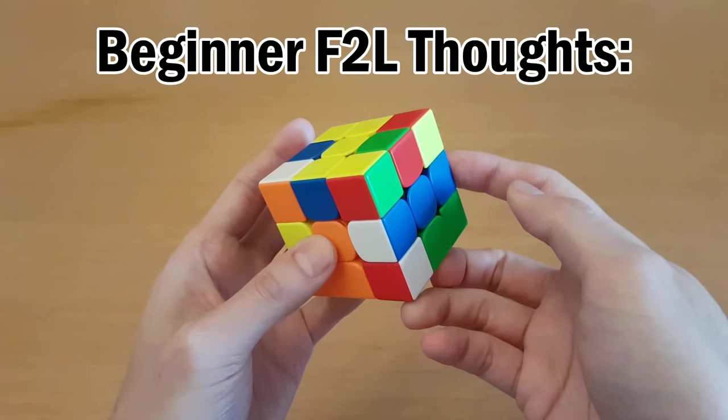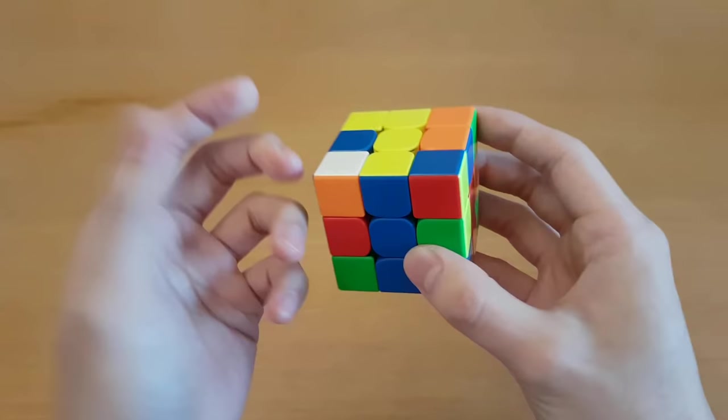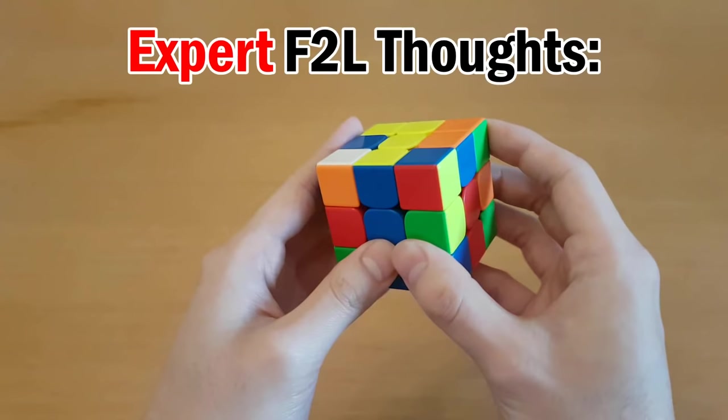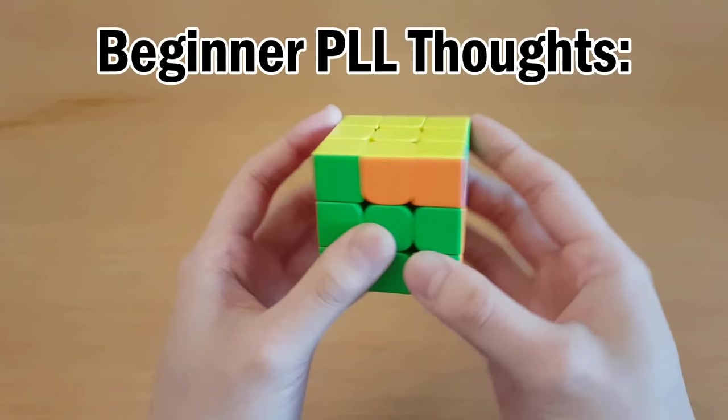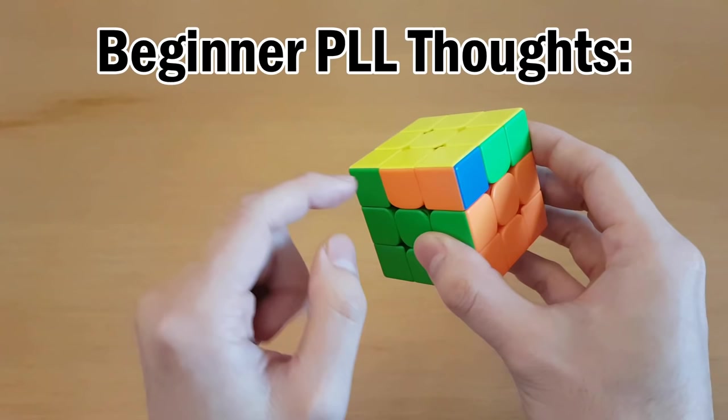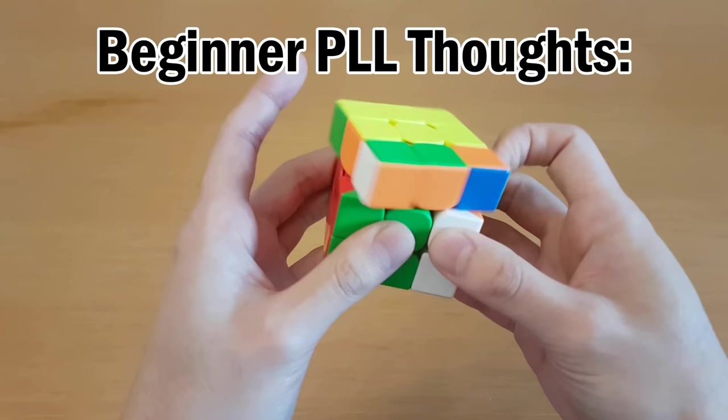But eventually it becomes, oh hey, it's this one. I know how to do that one. I also know how to do this one. This also applies to last layer algorithms. I need this edge here and they swap. I need these two corners to swap. Okay, I will do the one that goes like this with the left hand here, then with the left hand here and then solve this block and then solve this block and now I am done. But eventually it's just, oh that pattern, I do this thing.